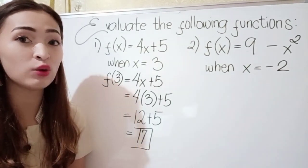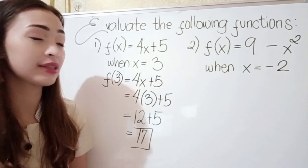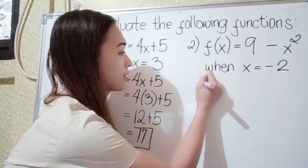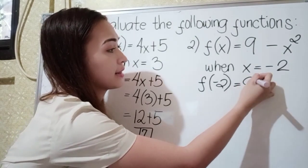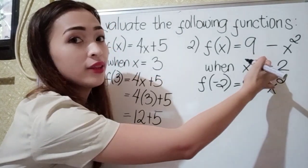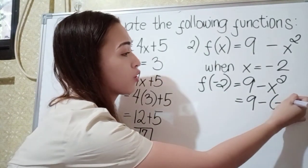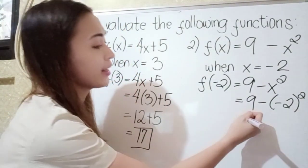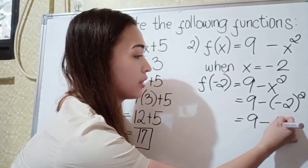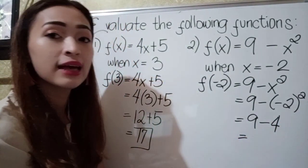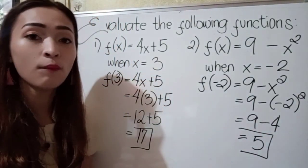For number 2, we have f(x) equals 9 minus x squared, when x is equal to negative 2. Again, just substitute negative 2 to x. So f(negative 2) equals 9 minus x squared. Substitute negative 2 to x: 9 minus negative 2 squared. Negative 2 times negative 2 is positive 4. Now subtract: 9 minus 4 is 5. So the answer in number 2 is 5.